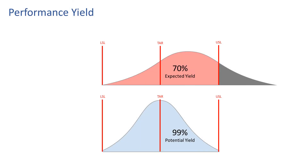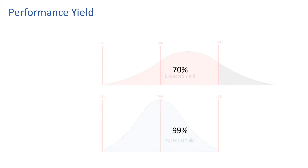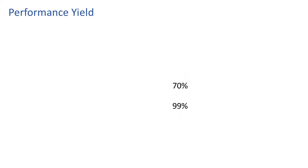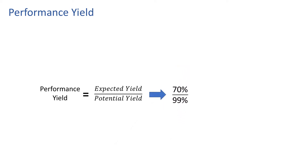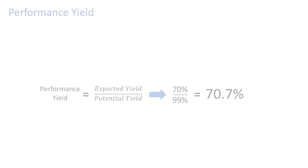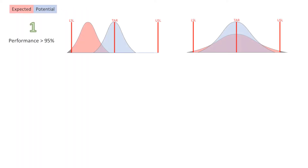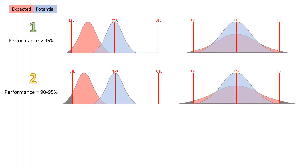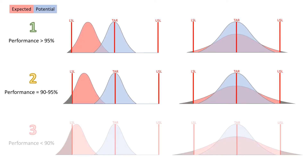Performance yield is a measure of how much a process's yield is suffering because it is not performing up to its potential — for example, due to being poorly centered. This component is graded as 1, 2, or 3.